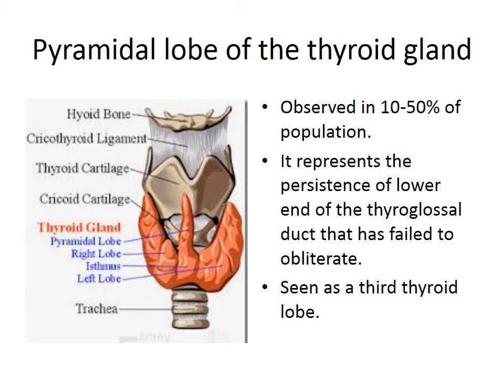The pyramidal lobe of the thyroid gland is seen in about 10 to 50 percent of the population. When the distal part of the thyroglossal duct fails to disappear, it persists as the pyramidal lobe of the thyroid gland, representing persistence of the lower end of the thyroglossal duct, and is often seen as the third lobe of the thyroid gland.